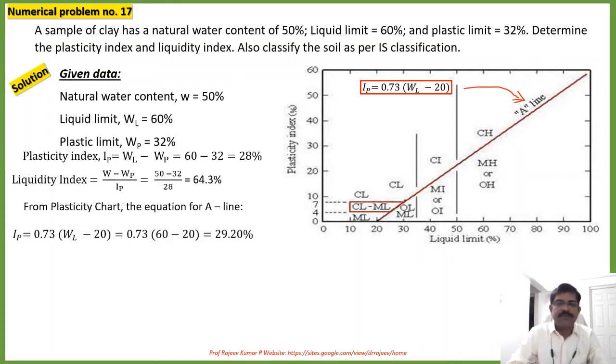So you can substitute the value of liquid limit that is given in the question as 60 percentage in this equation and you will get 29.2 percentage. We have already calculated with the given data the plasticity index of the soil. That is 28 percentage.